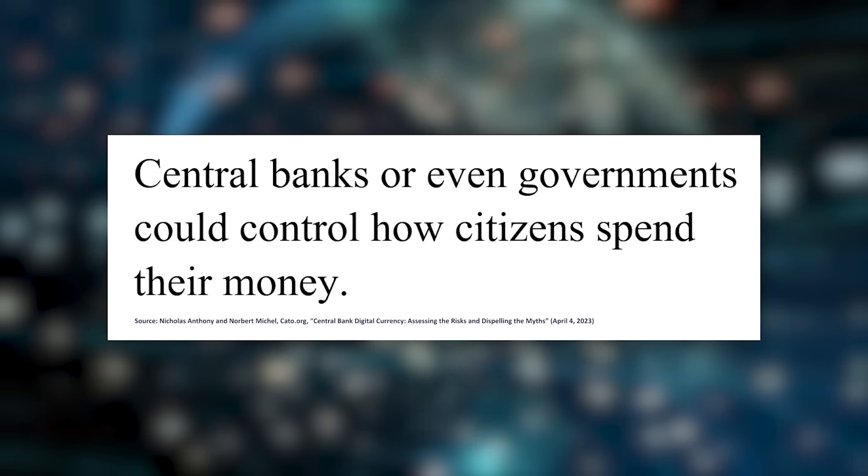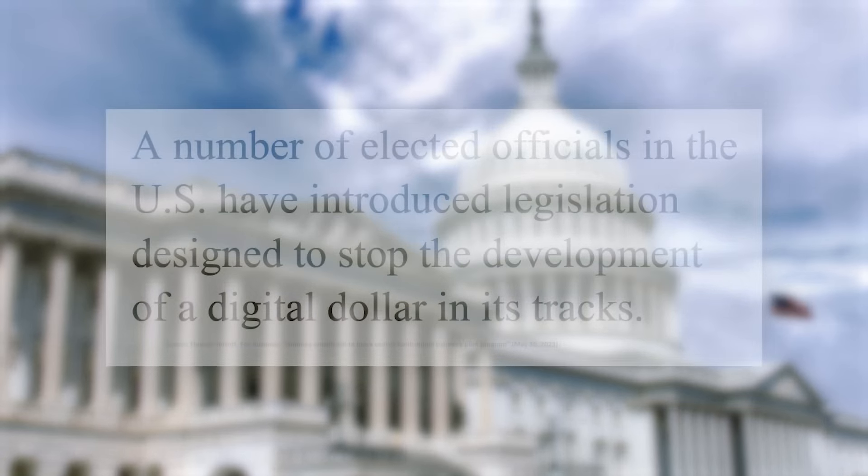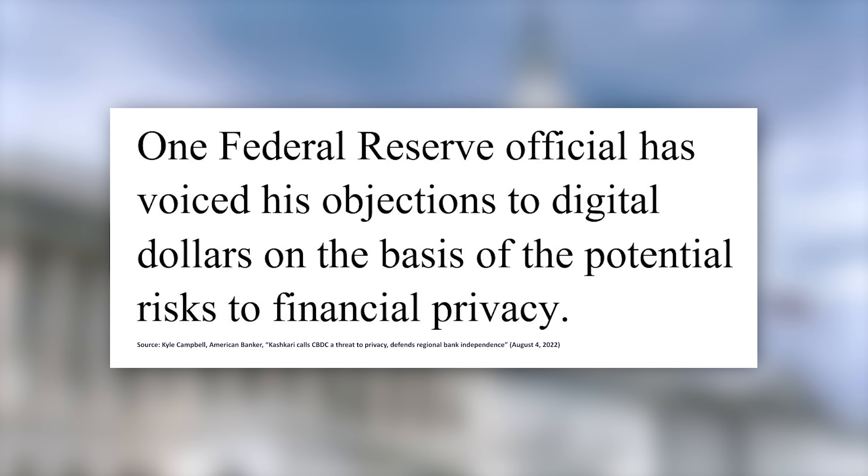As I alluded to, digital dollars issued to the public would require that each citizen keep an account at the Federal Reserve. That means the central bank theoretically could see how every user is spending their money. That's not all — central banks, or even governments, could control how citizens spend their money. Misgivings about the potential privacy implications of central bank digital currencies are so widespread that a number of elected officials in the U.S. have introduced legislation designed to stop the development of a digital dollar in its tracks. And even one Federal Reserve official has voiced his objections to digital dollars on the basis of the potential risk to financial privacy.